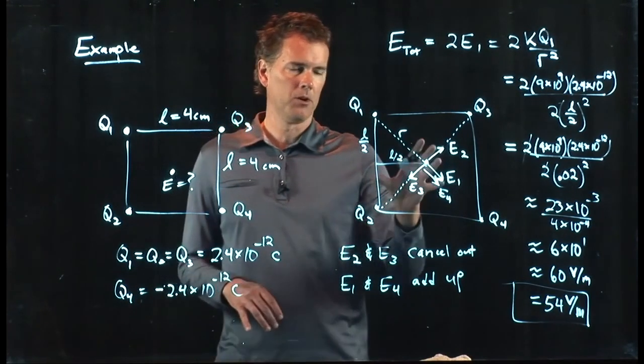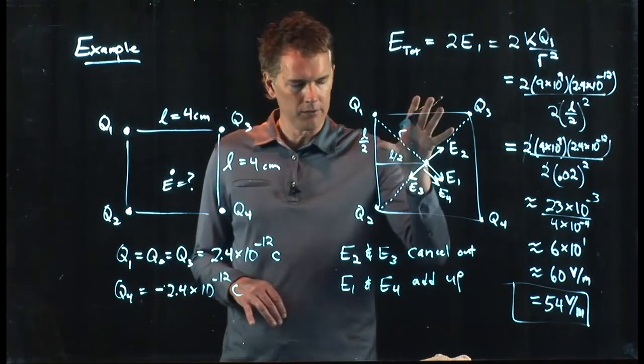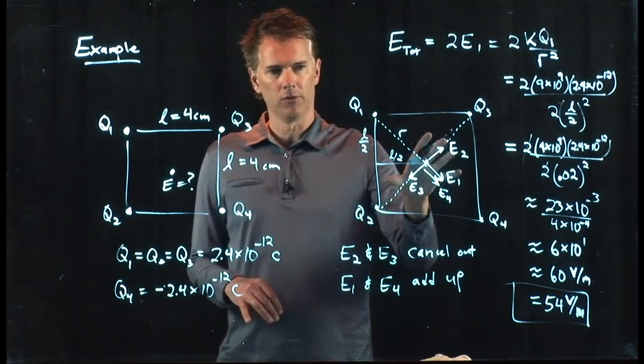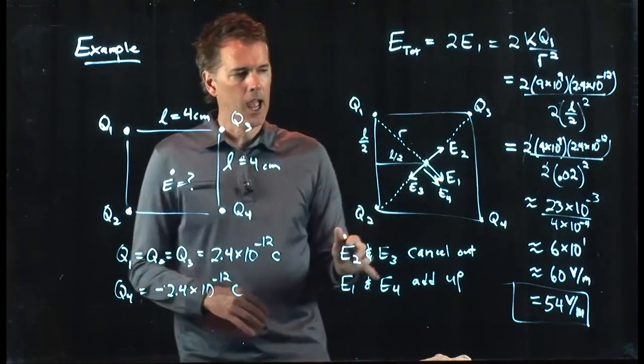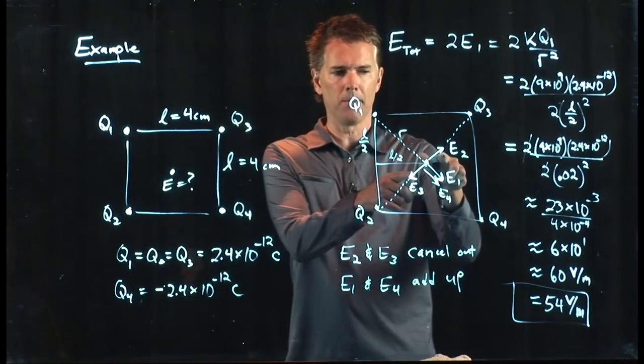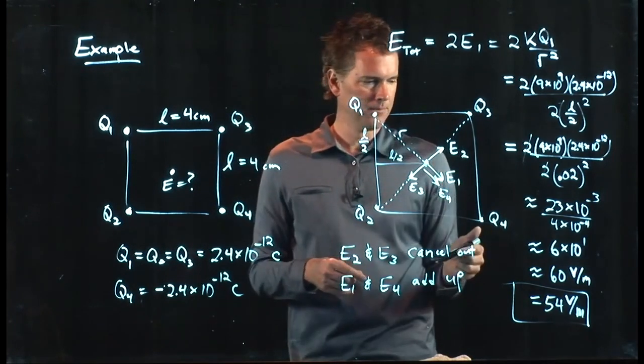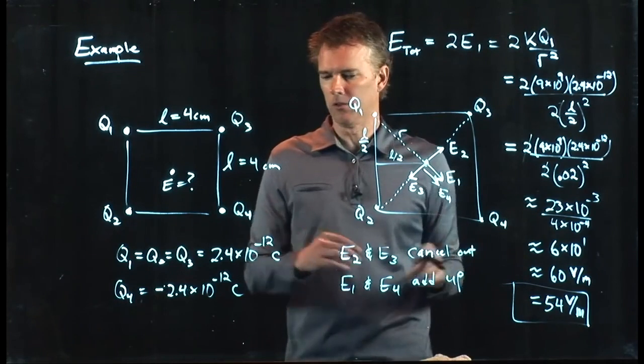And we took advantage of some real important things here. We took advantage of this notion of superposition—adding up electric fields according to the vector rules—and that greatly simplified the problem because two of them cancelled and the other two doubled. And then the rest was just plugging in some of the numbers.